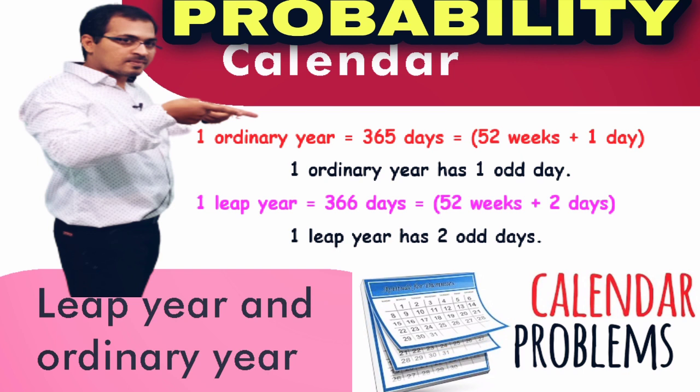As we know, there are approximately 365 days in a year. If 365 days is to be converted into weeks, 365 will be divided by 7 — there will be 52 weeks and 1 extra day. It means this extra day might be Monday, Tuesday, Wednesday, Thursday, Friday, Saturday, or Sunday.